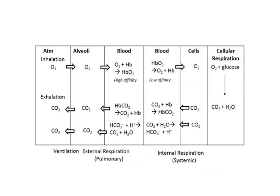Let's follow the movement of these gases. Oxygen coming in from the atmosphere: through inhalation it goes into the lungs, and then through external or pulmonary respiration it gets into the blood. It travels through the blood until it gets to the cells, at which point internal respiration occurs and oxygen is delivered to the cells. The cells then undergo cellular respiration, producing CO2 as a metabolic byproduct. The CO2 leaves the cells and goes back into the blood via systemic internal respiration, is transported back to the lungs, goes into the alveoli via external or pulmonary respiration, and is exhaled. So the flow of blood to the cells is oxygenated, and coming back from the cells it is deoxygenated.